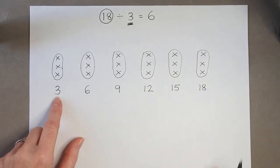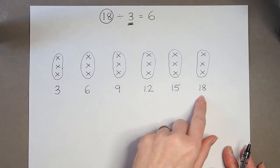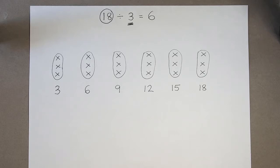And then we can see 1, 2, 3, 4, 5, 6. That was 6 3's that we counted.